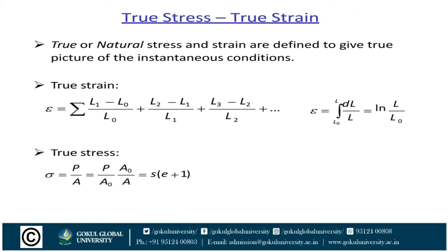Therefore, we need to find true (natural) stress and strain. True strain: epsilon equals the integral from L₀ to L of dL/L, which equals ln(L/L₀). True stress: sigma equals P/A, which can be expressed as (P/A₀) × (A₀/A), giving sigma equals s × (e + 1) for different sections such as rectangular and circular sections.